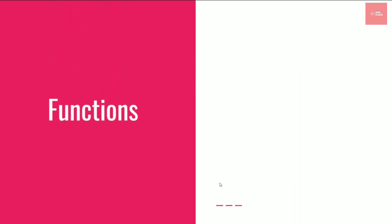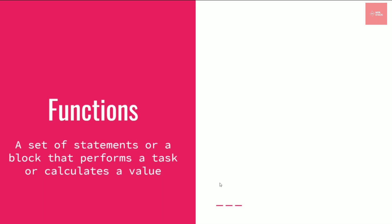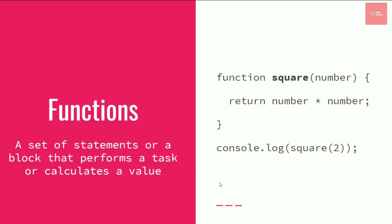Now let's move on to the next reference data type — functions. Functions are the backbone of JavaScript, and a real-world application is nothing but hundreds and thousands of functions being executed. A function is a set of statements, or a block, that performs a task, calculates a value, or returns something. Here we can see an example called 'square', which returns the square of a number.